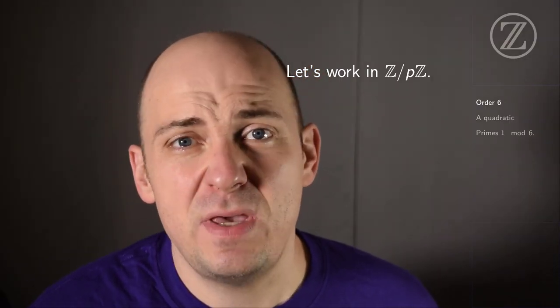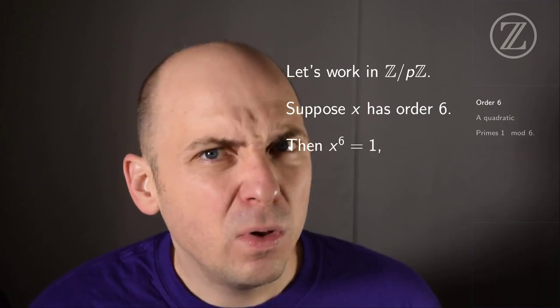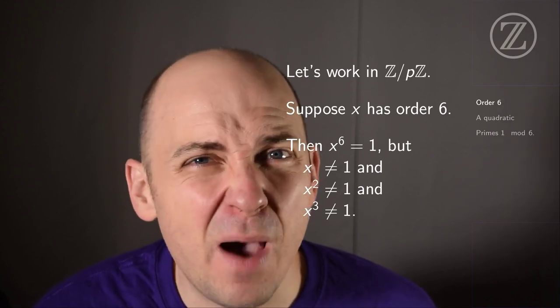Let's work in Z mod p, the integers modulo p, and suppose I've got an element x with order 6. What does that mean? Well, it means that x to the 6 is 1, but x isn't 1, and x squared isn't 1, and x cubed isn't 1. I want to unpack this a bit.